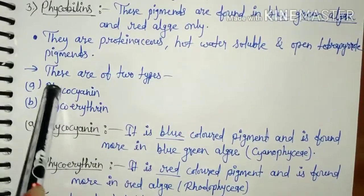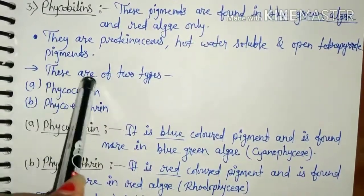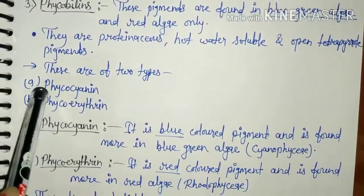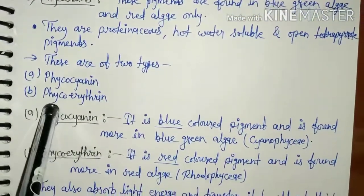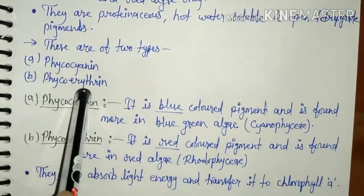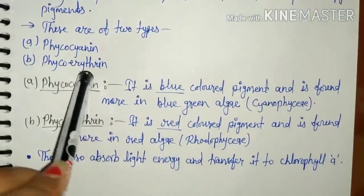Phycobilins are of two types: phycocyanin and phycoerythrin. 'Cyanin' represents blue color and 'erythrin' represents red color.